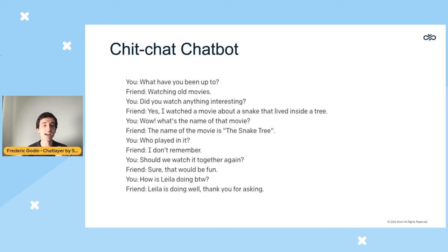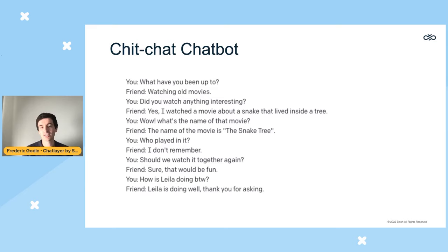Here's an example of a chit-chat conversation I had with GPT-3. I said 'Hey, what have you been up to?' and GPT-3 answered 'I've been watching some old movies.' The conversation continued, and at one point I asked who played in it, then whether we should watch it together, and then about how Lila was doing — and it gave consistent, contextually aware replies.